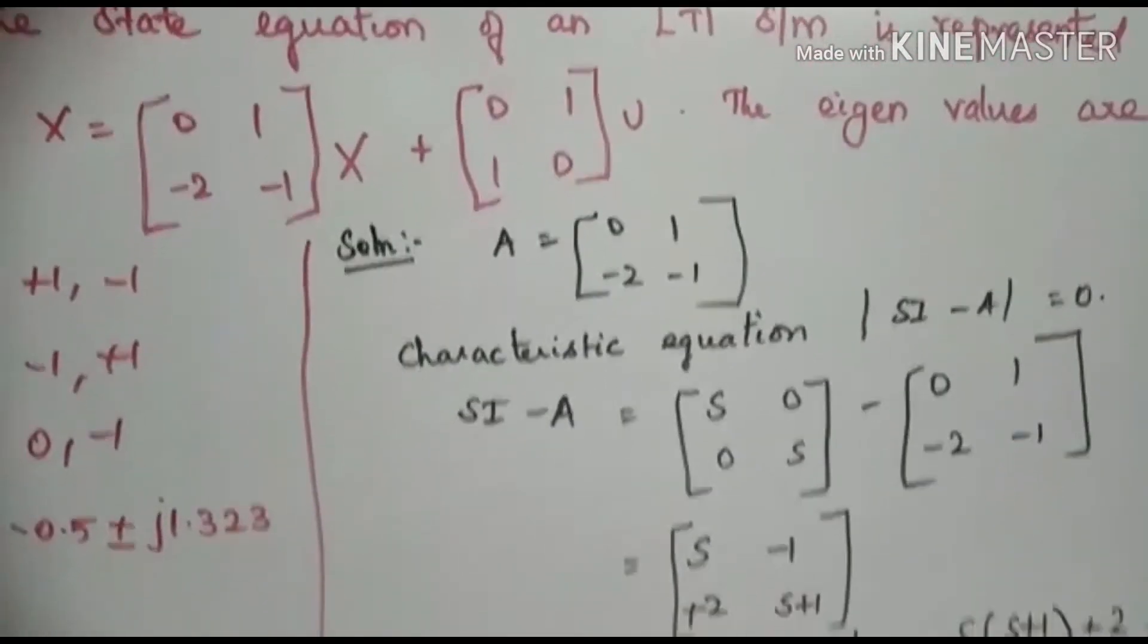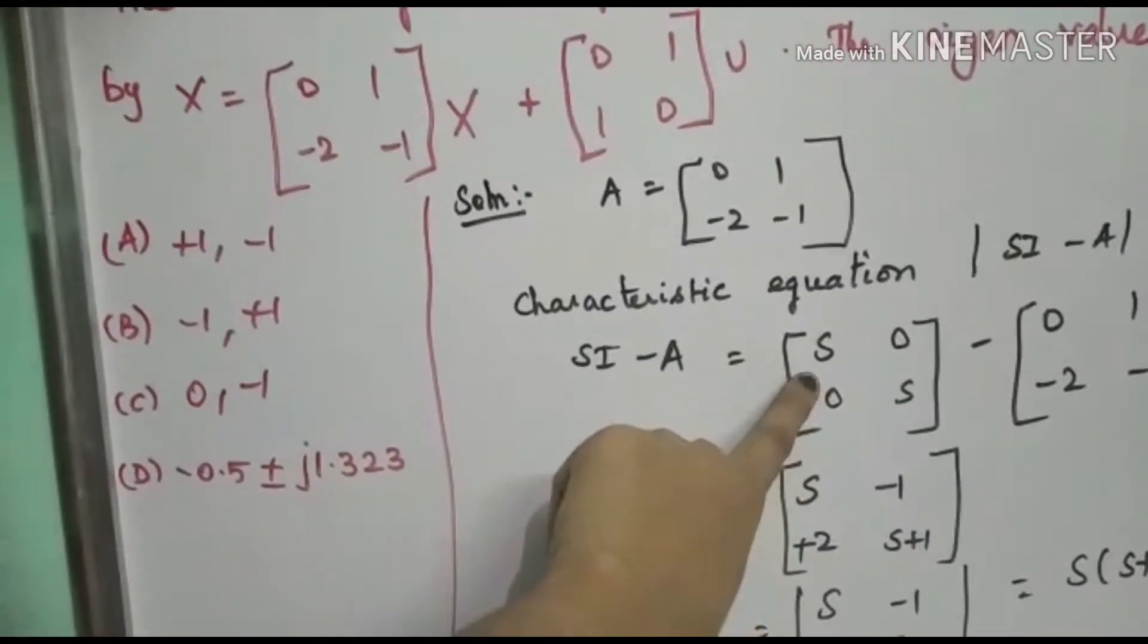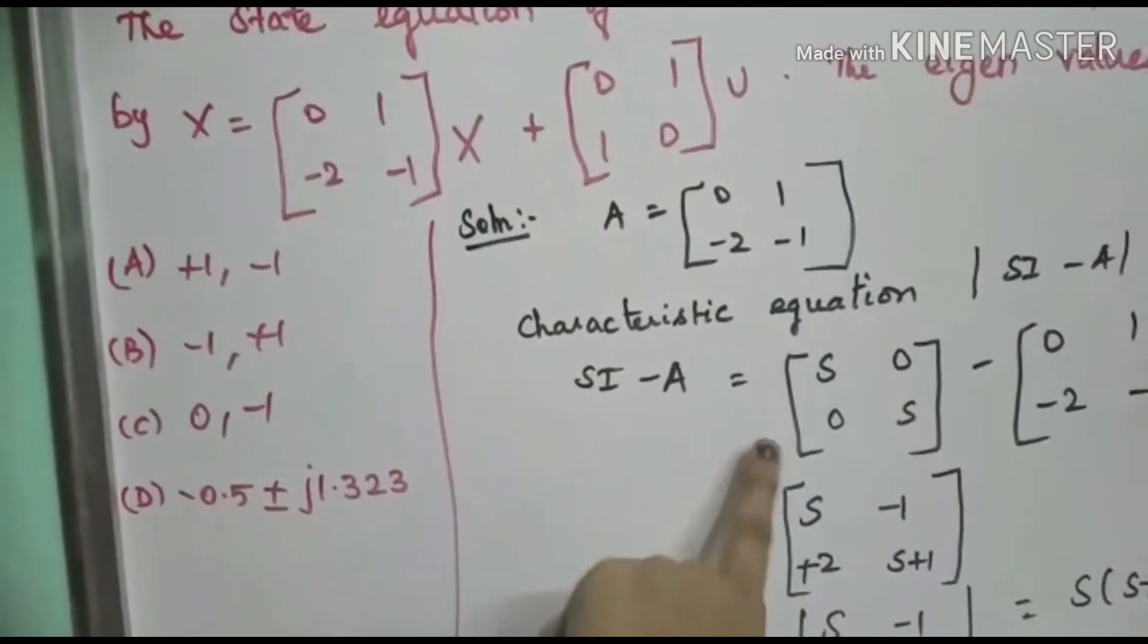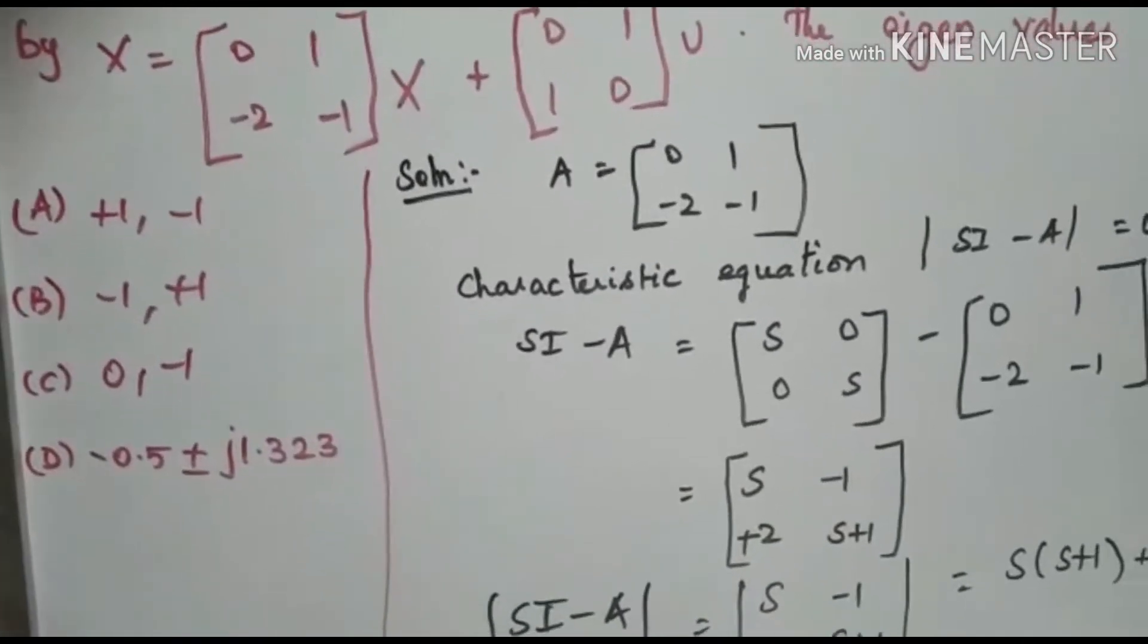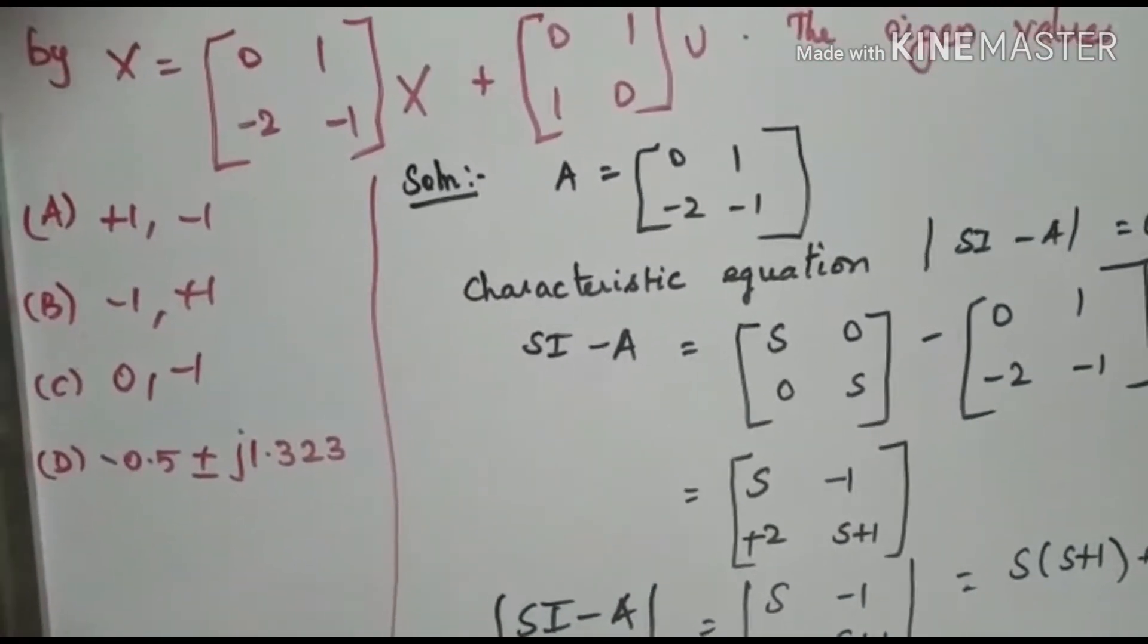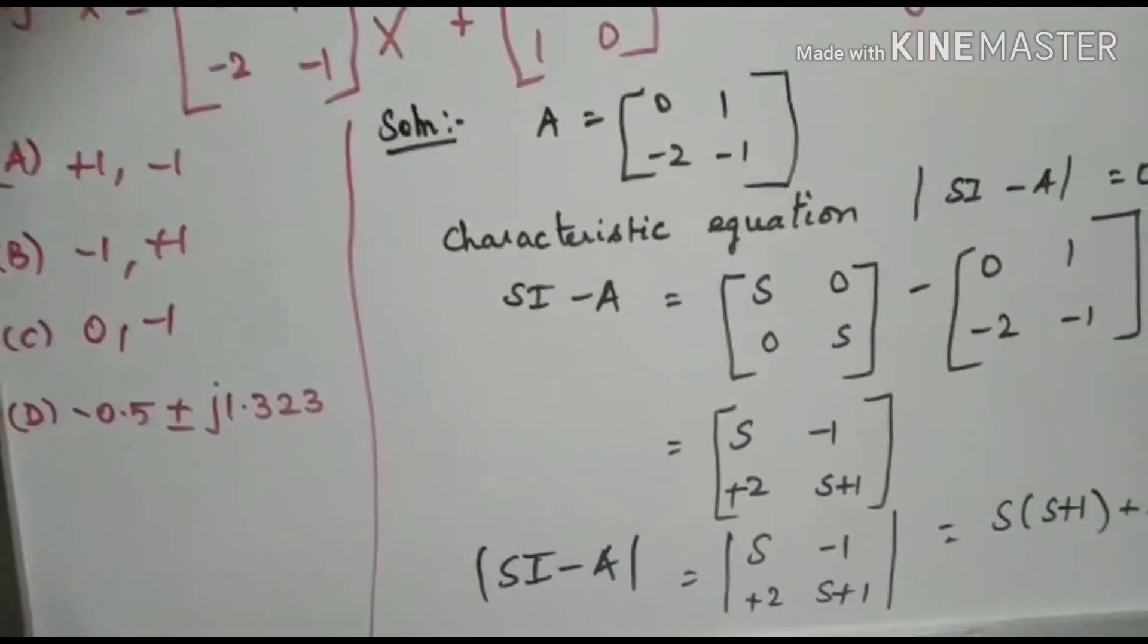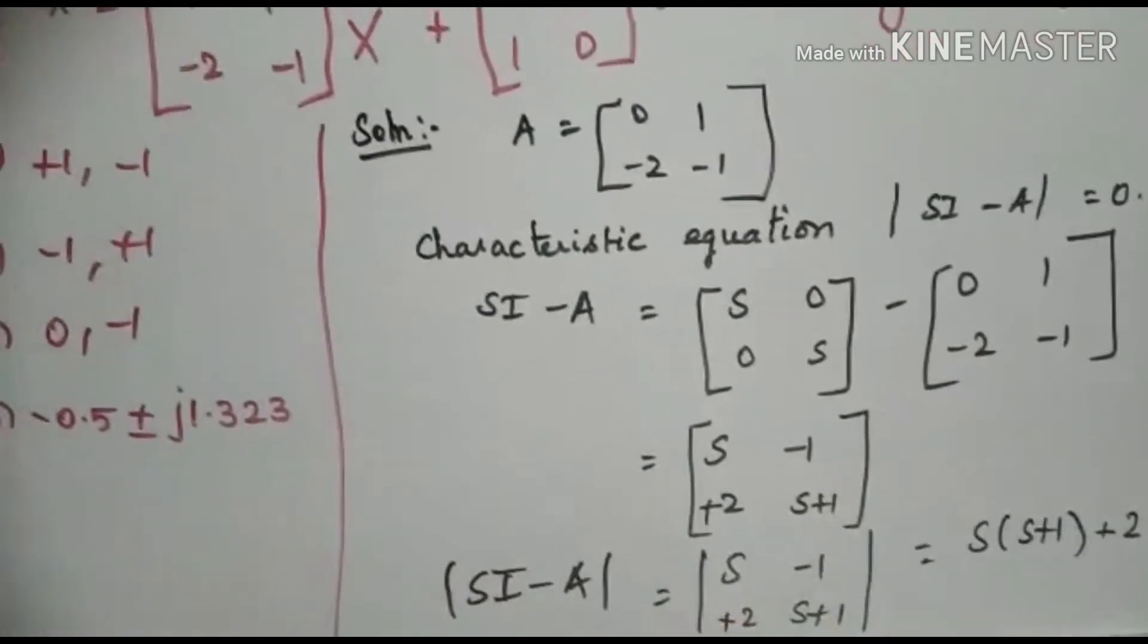See here, our A matrix is 2 by 2 matrix. So we need to consider our SI matrix. That is, the identity matrix is 2 by 2 matrix. So S times I is [S, 0; 0, S] minus [0, 1; -2, -1], which equals [S, -1; 2, S+1].